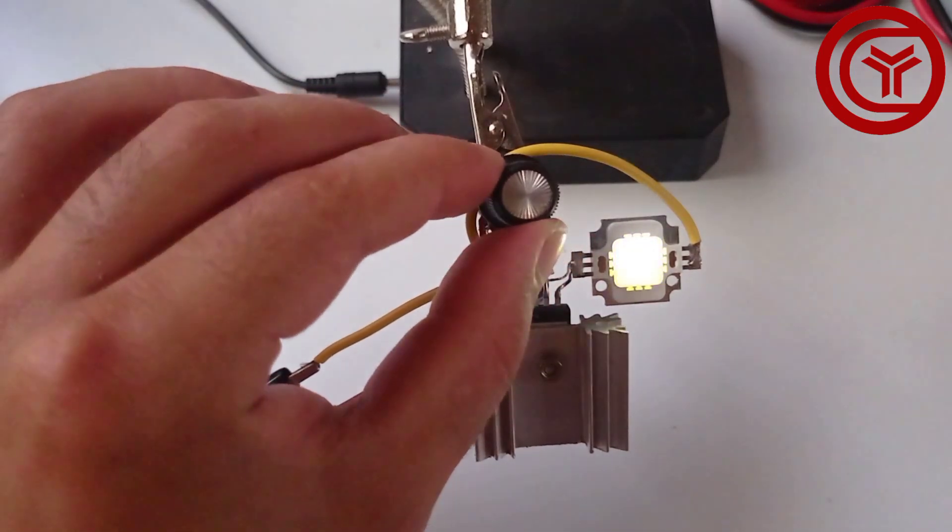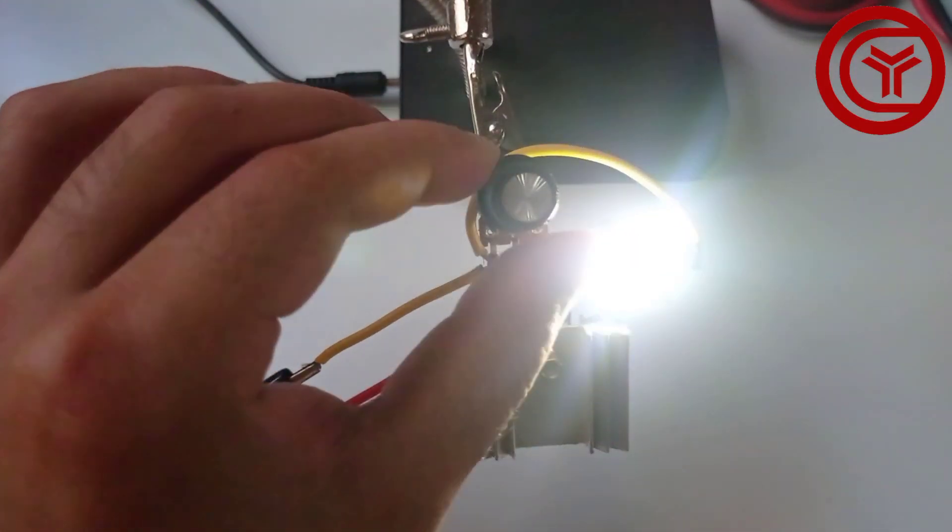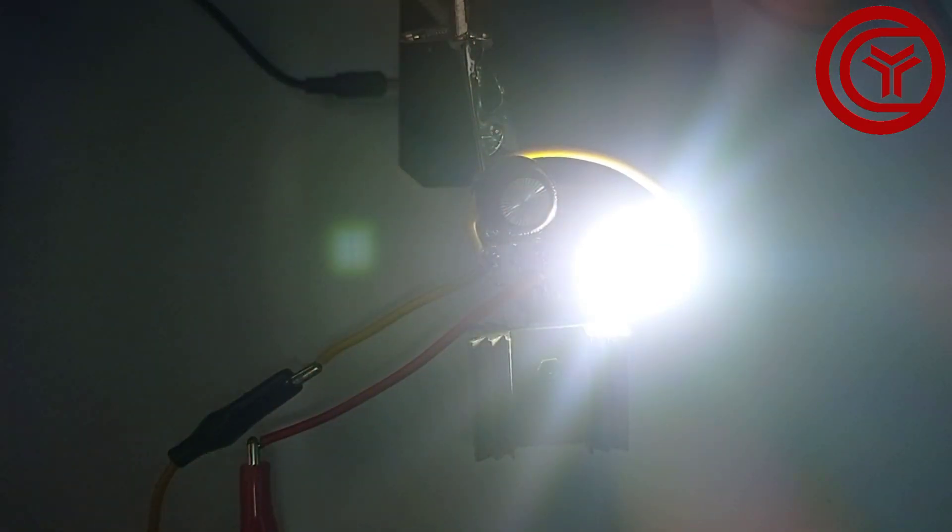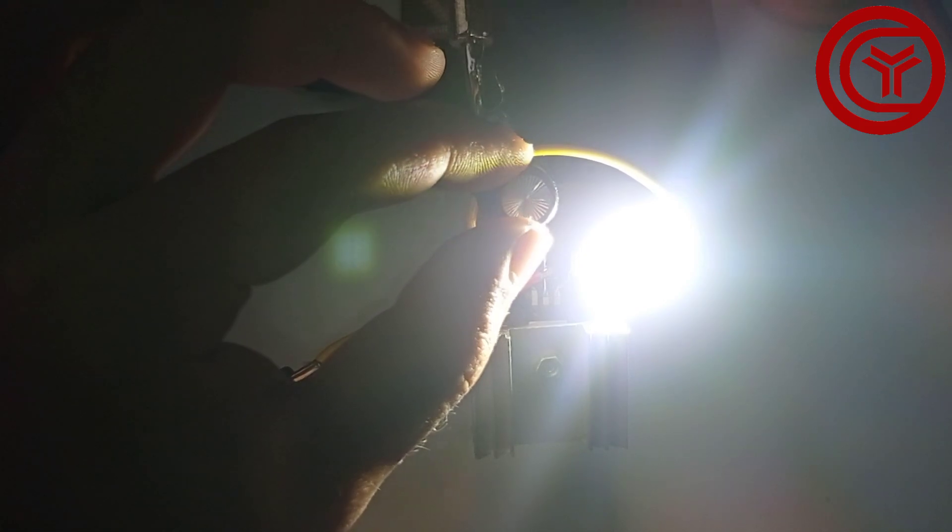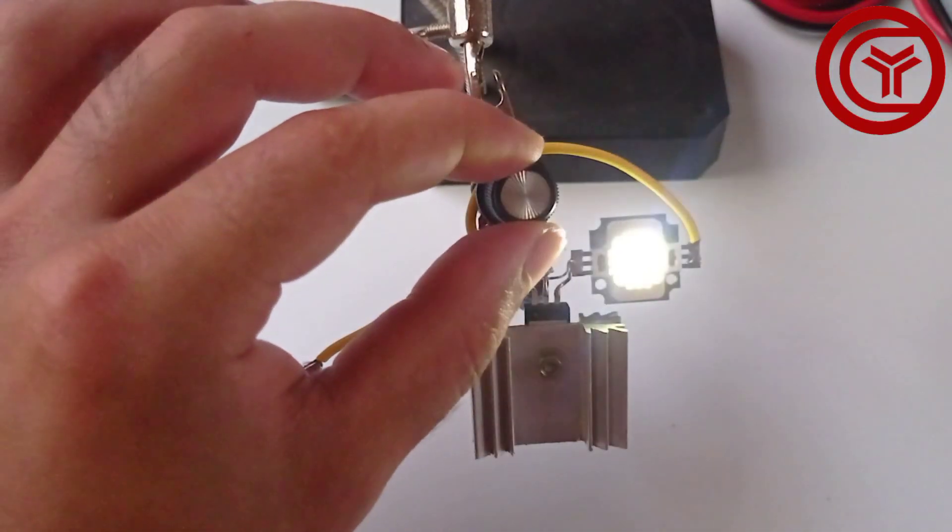As you can see, moving the knob clockwise increases the brightness of the LED. And moving the knob anticlockwise decreases the brightness.